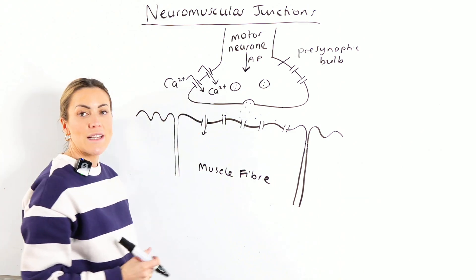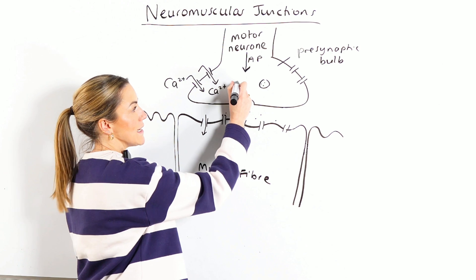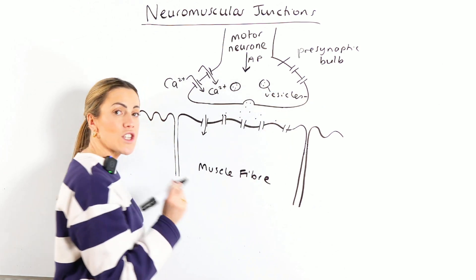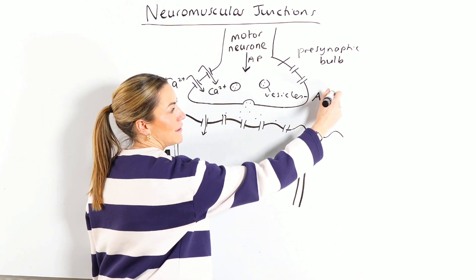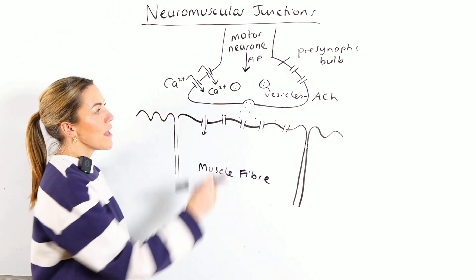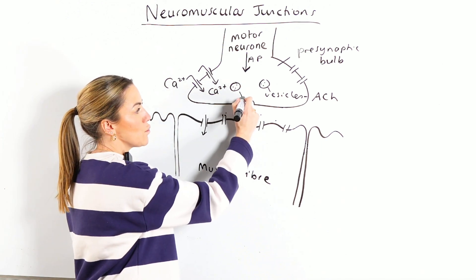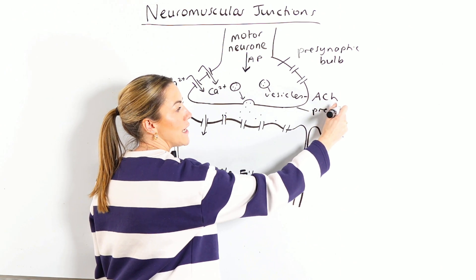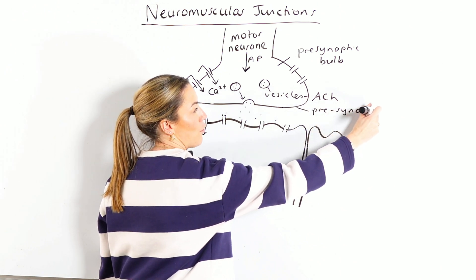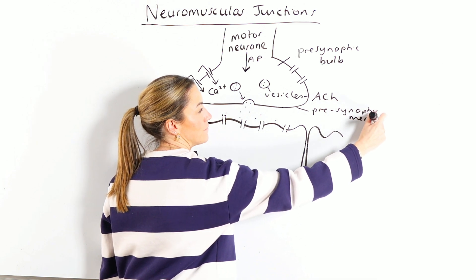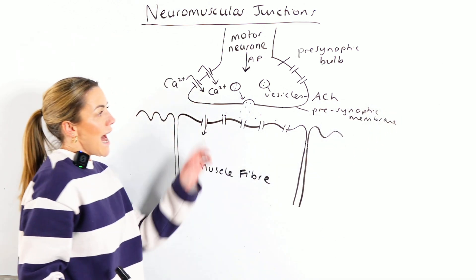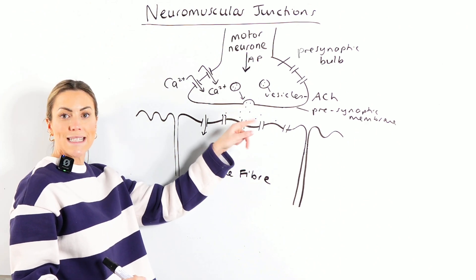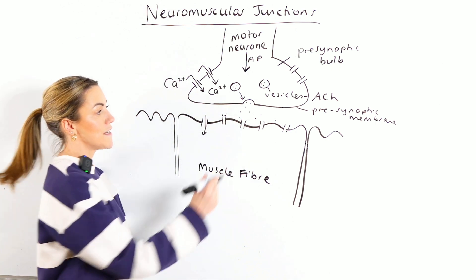When those calcium ions diffuse in, it causes these vesicles — which are carrying the neurotransmitter acetylcholine — to move towards and fuse with what we call the presynaptic membrane. As they fuse with the presynaptic membrane, they're going to release the neurotransmitter, the acetylcholine, into the synaptic cleft.